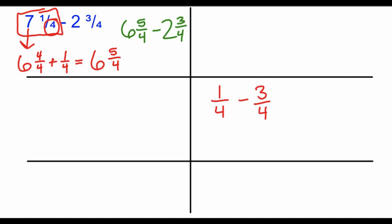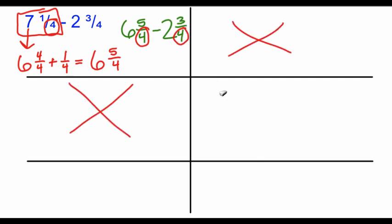I'm going to quickly erase the fractions we had here. Now we can solve this problem. Our denominators in our new problem are 4 and 4, so we can skip finding least common denominator and skip making equivalent fractions. In this box, we're just going to subtract our fractions. 5 fourths minus 3 fourths. Notice now that first fraction is bigger, so we can subtract and we get 2 fourths.